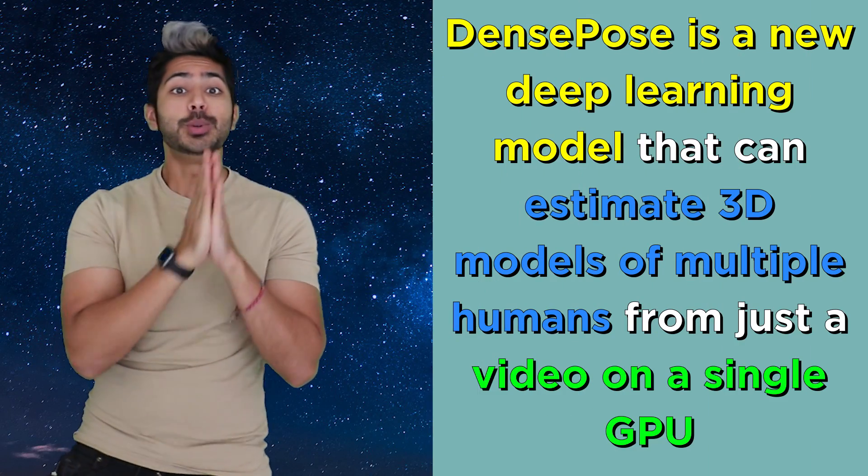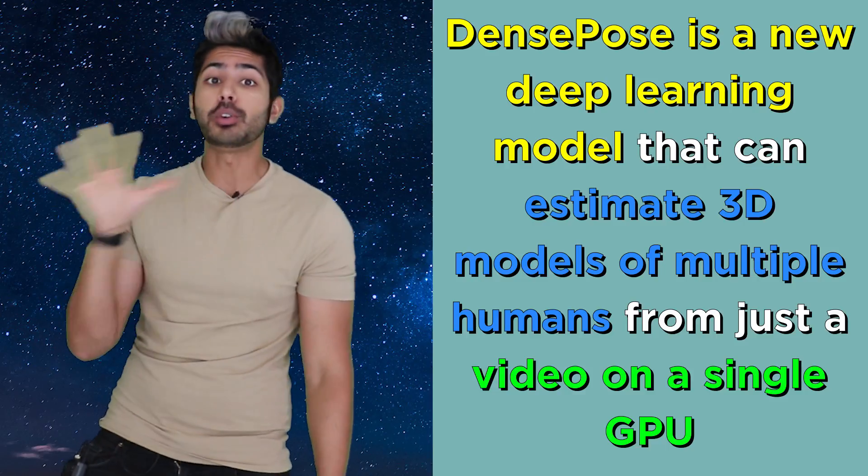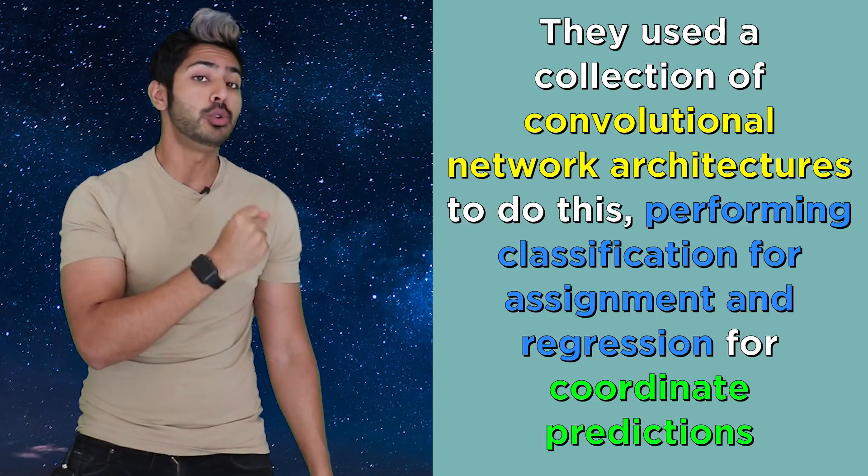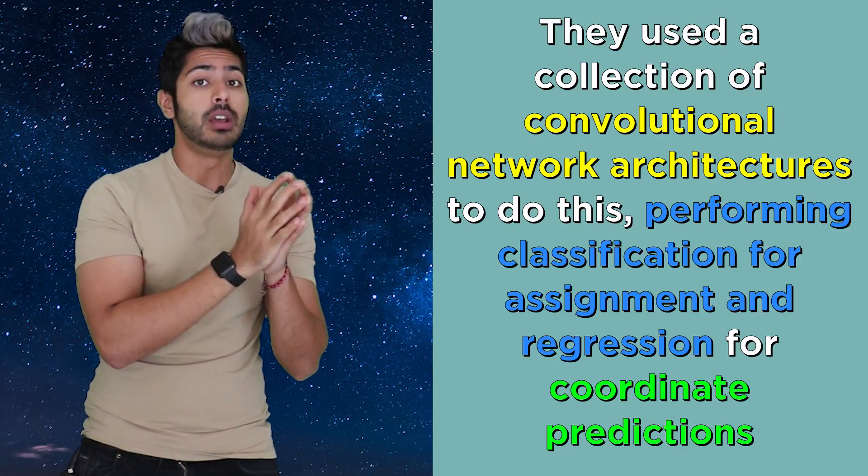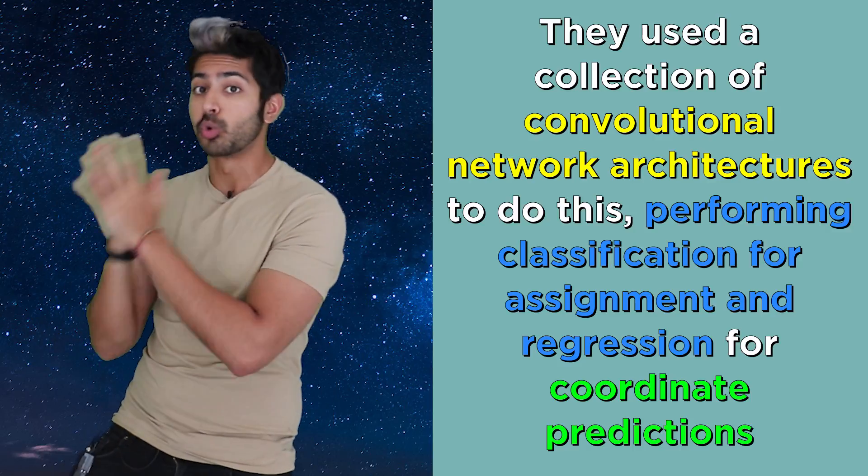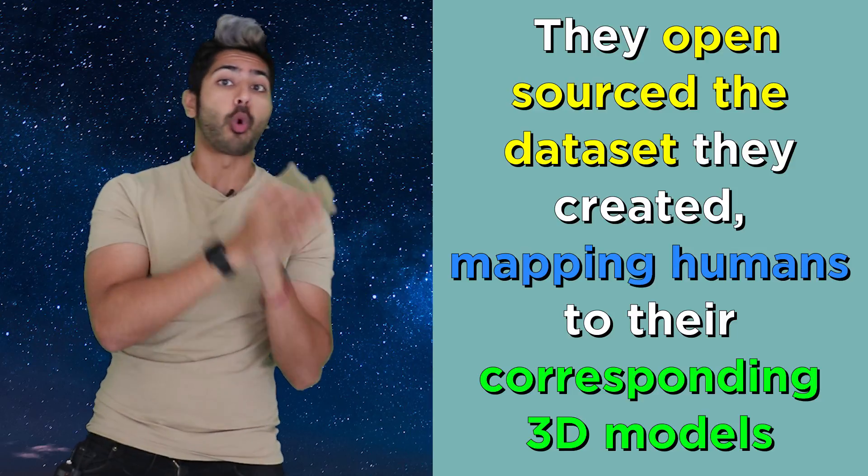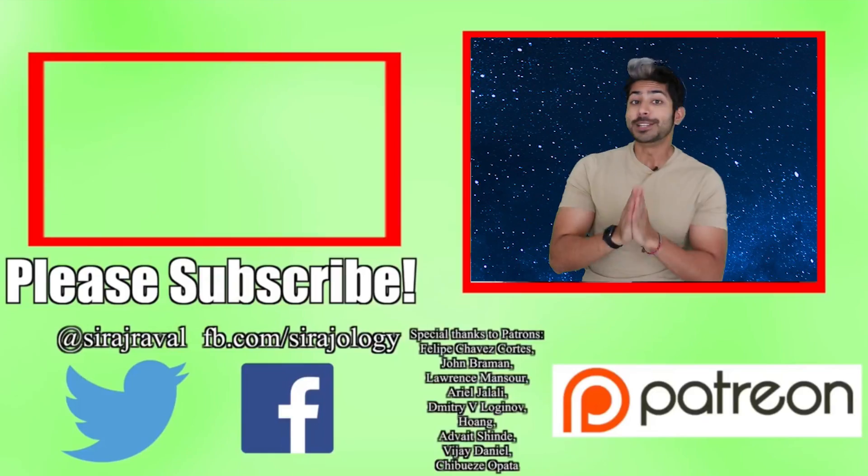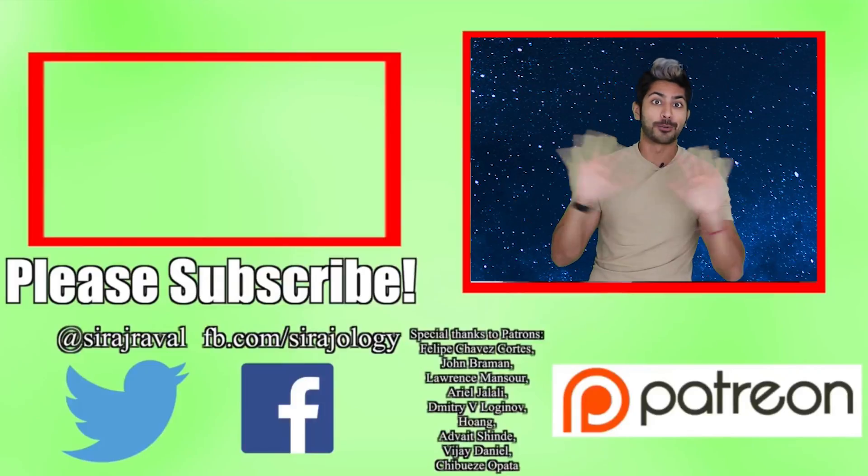Three things to remember from this video: DensePose is a new deep learning model that can estimate 3D models of multiple humans from just a video on a single GPU. They use a collection of convolutional networks to do this, performing classification for assignment and regression for coordinate predictions. And they open sourced the dataset they created, mapping humans to their corresponding 3D models. Please subscribe for more programming videos, and for now I've got to make a goodbye pose, so thanks for watching!